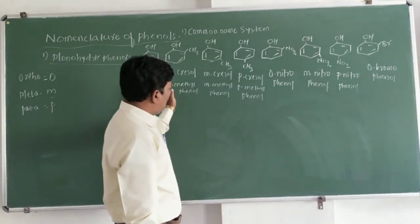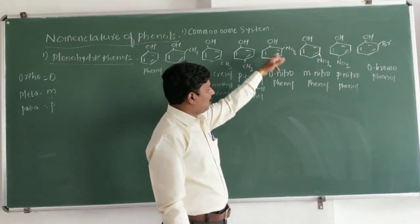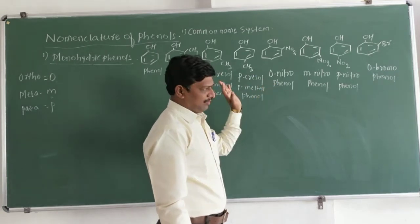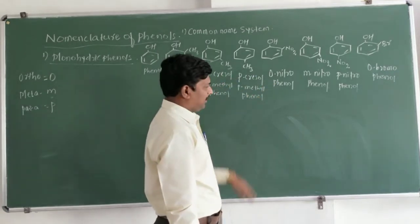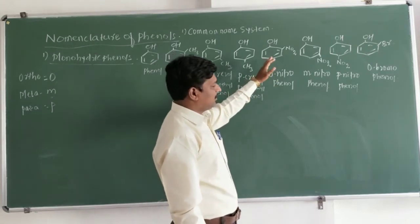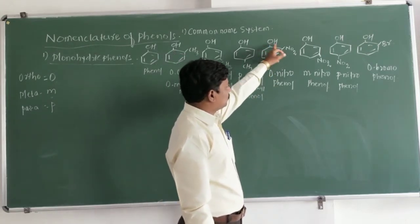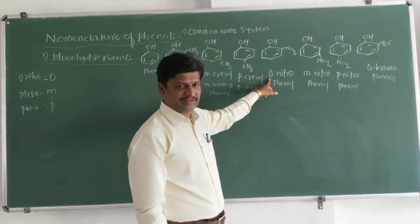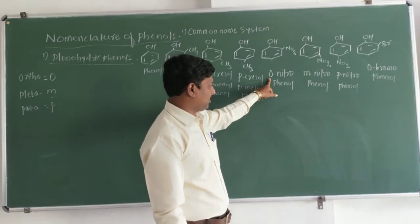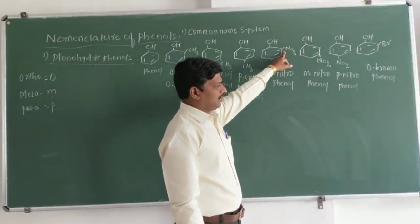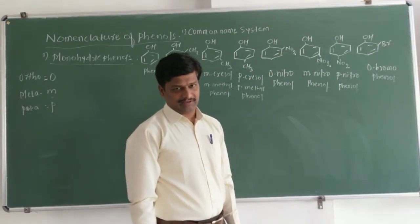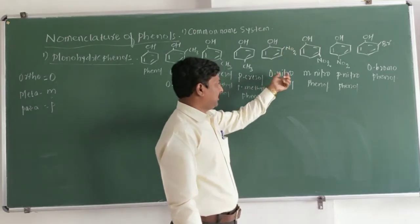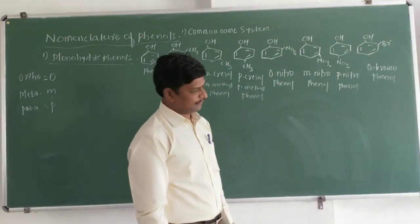The next structure — ortho-nitrophenol — its common name is derived because the two substituents are in the adjacent position. Therefore the prefix is ortho, the NO2 (nitro) group is present, and the parent compound is benzene with OH, which is phenol. Therefore it is ortho-nitrophenol.